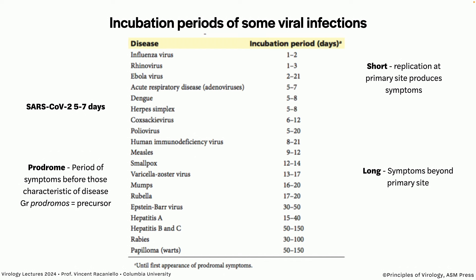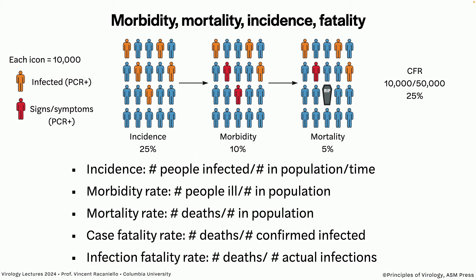Another definition to point out is prodrome — the period of symptoms before those characteristic of the disease. Many virus infections start with nonspecific symptoms, often called flu-like because they're caused by interferon: runny nose, cough, muscle aches, brain fog. Those can be caused by many viruses because they're caused by the innate immune response — that's the prodrome. Then you get into something specific for the virus, like the rash of measles.